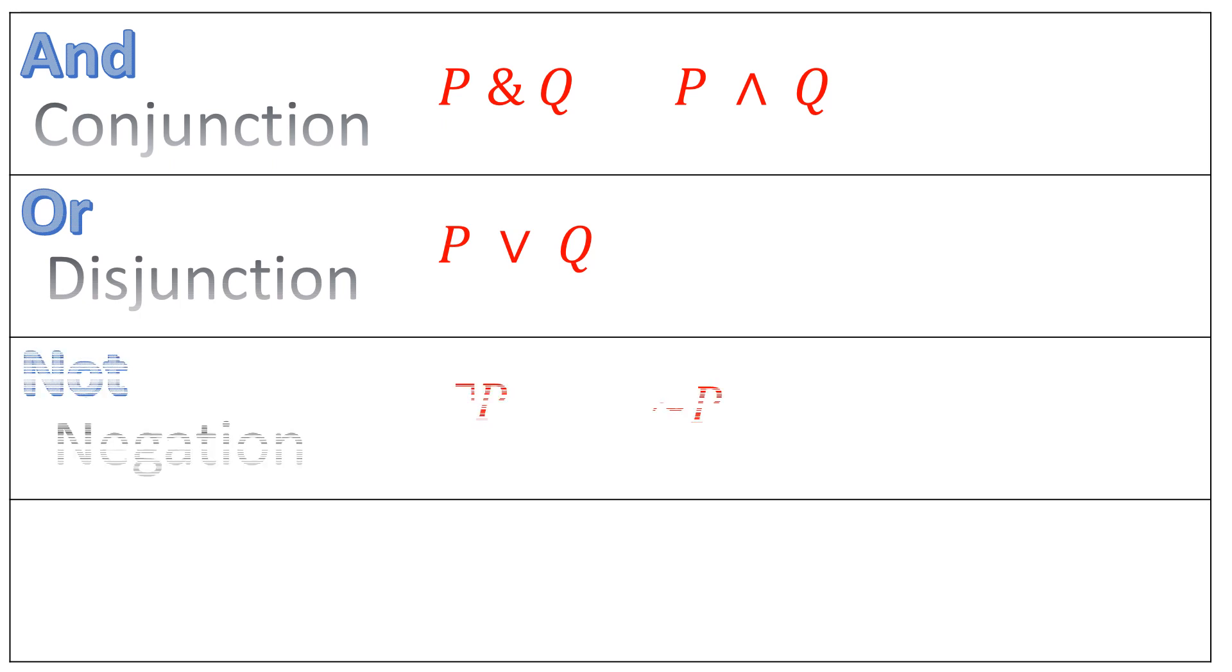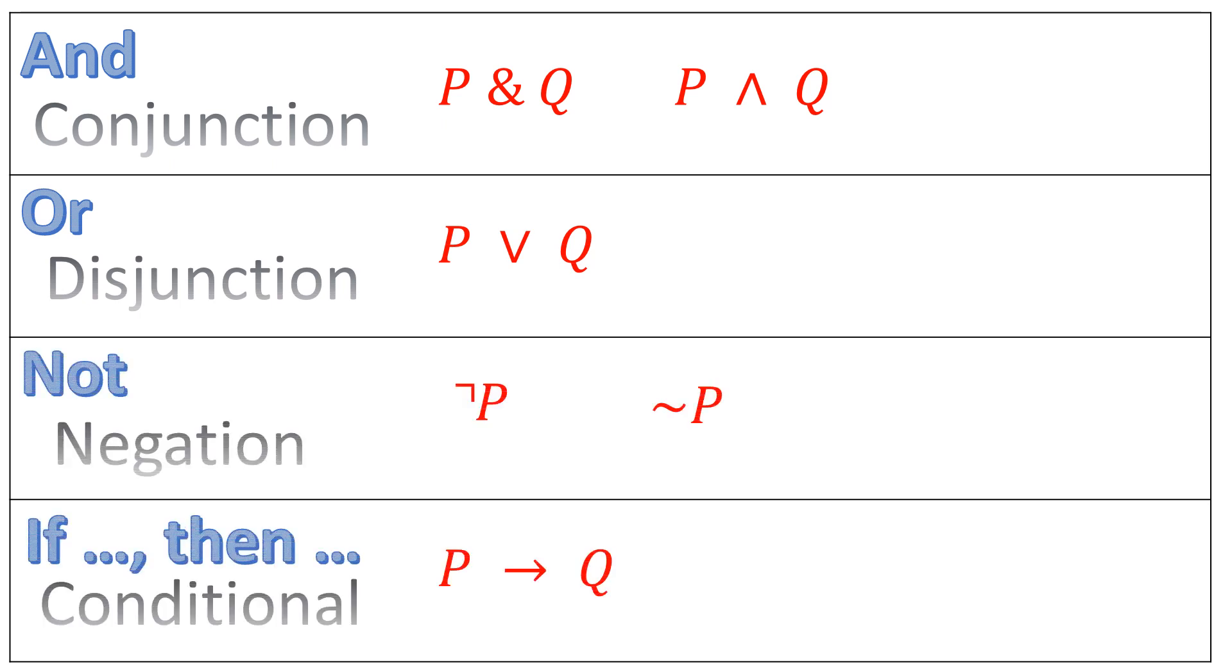We're dealing with some of the various sentential connectives, such as the and, the or, the not, the if-then. A sentential connective is always something that attaches itself to at least one atomic sentence, and this forms, overall, a molecular sentence.